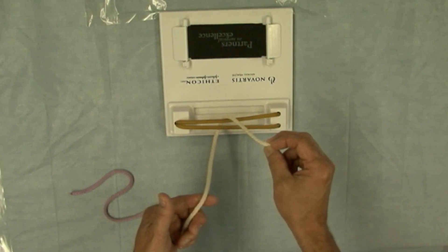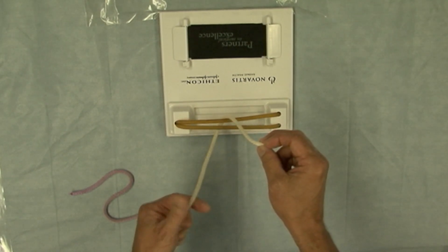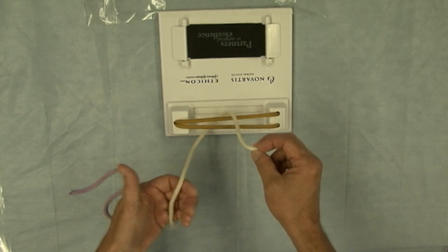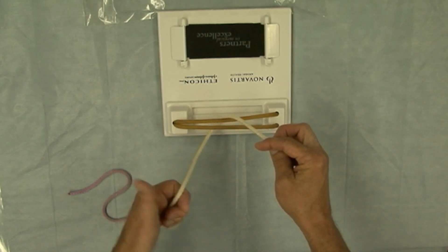Now my left hand in the two-hand technique is going to do the leading. So I'm going to have the suture coming across the palm of my hand, such as this, and the base of my fingers.